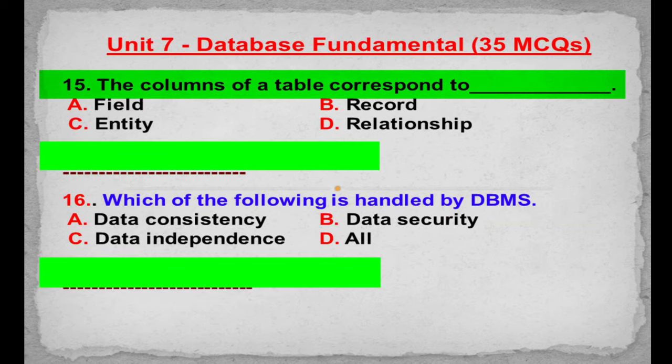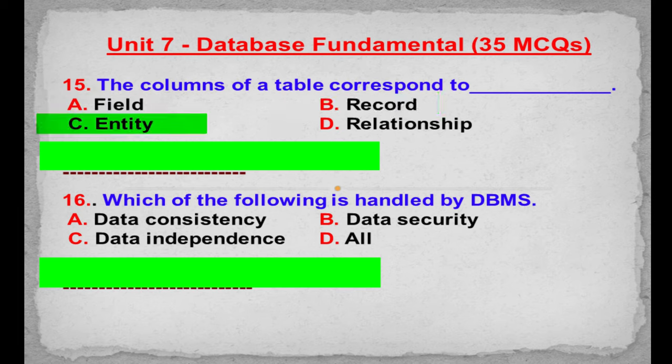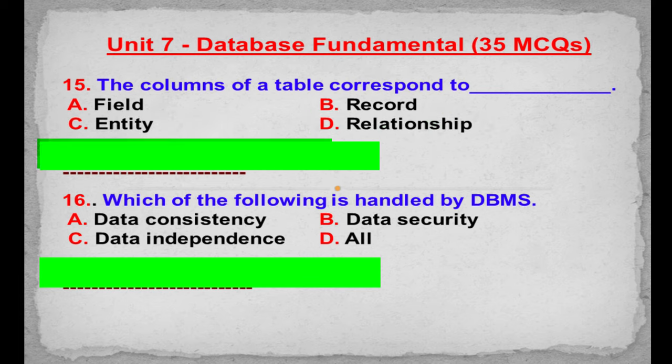MCQ number 15: The columns of a table correspond to. Option A: Field. Option B: Record. Option C: Entity. Option D: Relationship. Correct answer is Option A: Field.